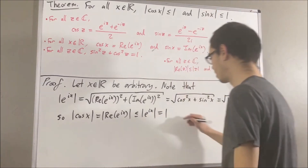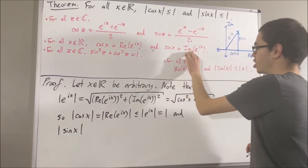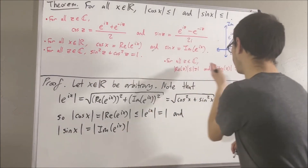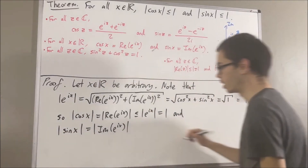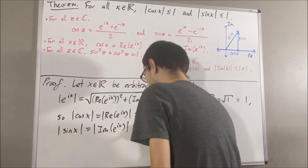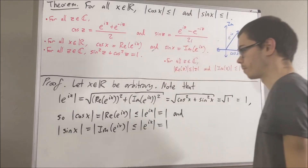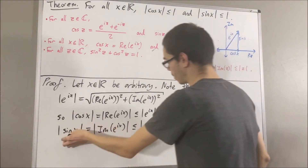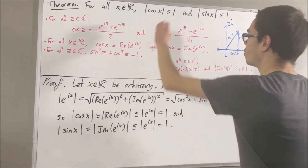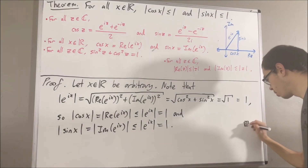As for the absolute value of sine x, we know that sine x is equal to the imaginary part of e to the ix. And based on this fact, we know that the absolute value of the imaginary part of e to the ix is less than or equal to the absolute value of e to the ix, which is equal to 1. So, this tells us that the absolute value of sine x is less than or equal to 1. And so, we have shown that both of these inequalities are true, and this completes the proof.